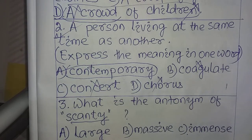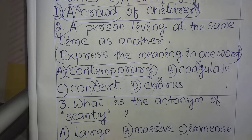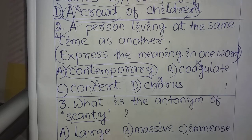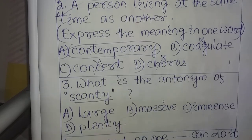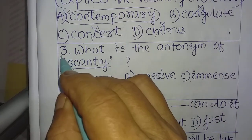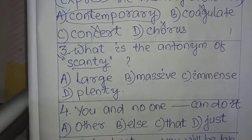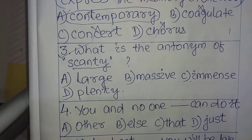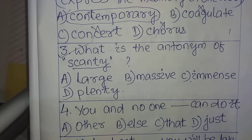Contemporary means a person living at the same time as another — so the answer is contemporary. Now come to question number three: what is the antonym of 'scanty'?